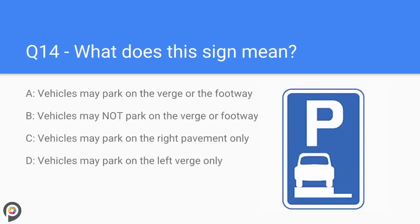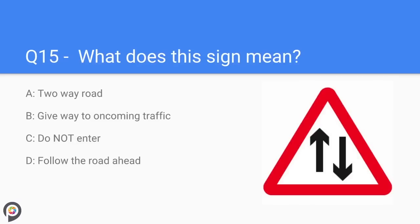Question fourteen: what does this sign mean? A vehicle may park on the verge or footpath. As there is no red line, it means you can park as opposed to not parking. However, as per the Highway Code, most occasions it is not permitted due to safety reasons.